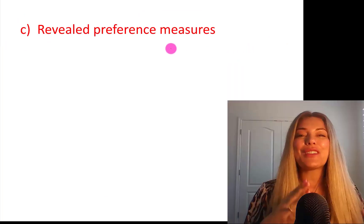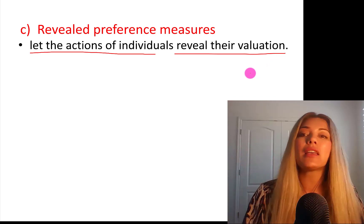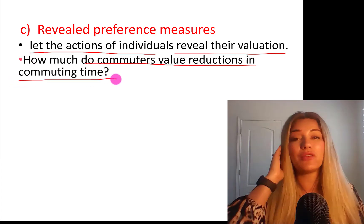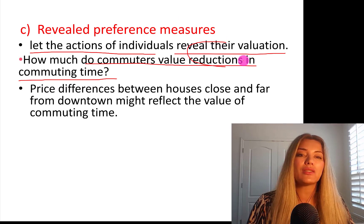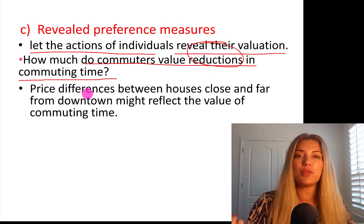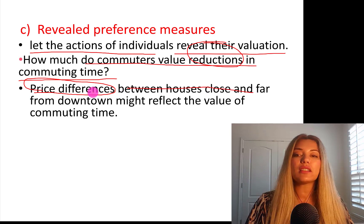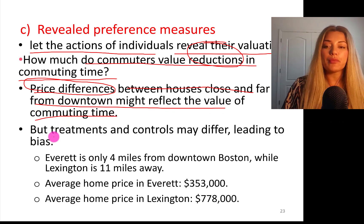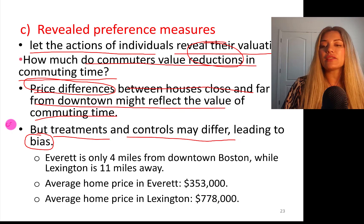Revealed preference measures let the actions of individuals reveal their valuations — you don't ask them. How much do commuters value reductions in commuting time is an example of revealed preference. You look at market data — price differences between houses close and far from downtown — which may reflect commuting time. However, treatments and controls may differ, leading to bias, and that's the caveat we need to know about revealed preference.